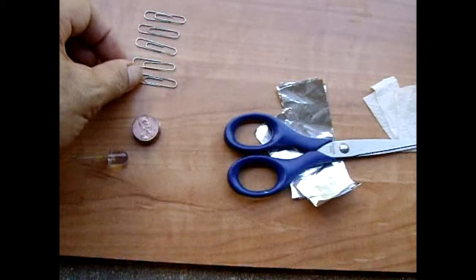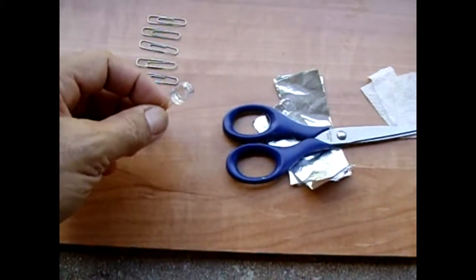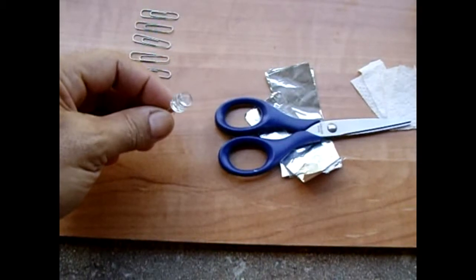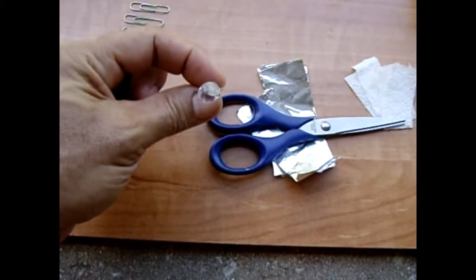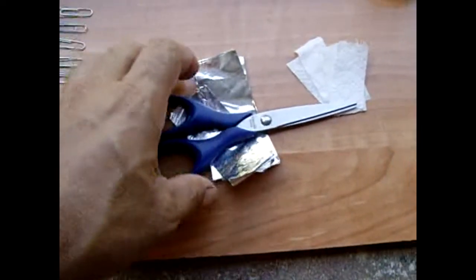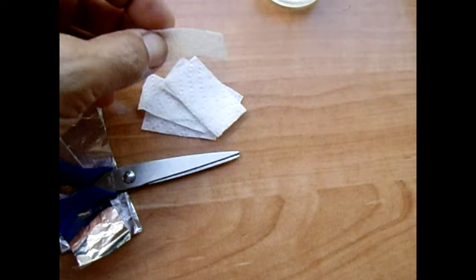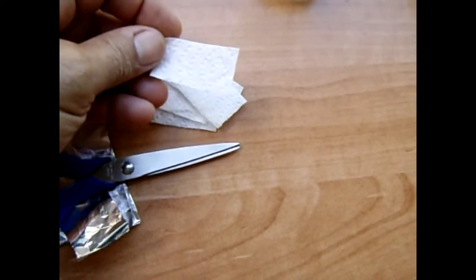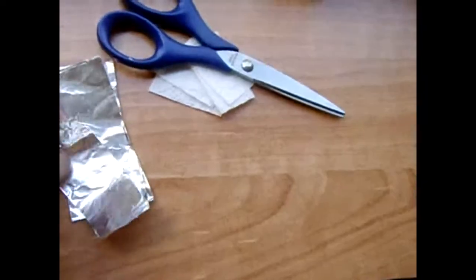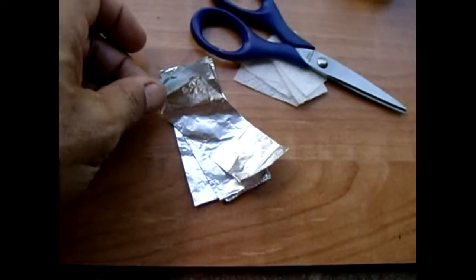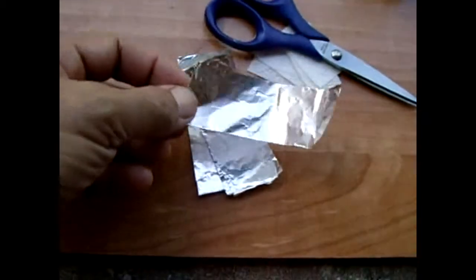You're gonna need five paperclips, one ultra bright LED, in this case I'm using a 10 millimeter. Five pieces of paper towel, each one is cut about three quarters of an inch wide by one and three quarters of an inch long. You're also going to need five strips of aluminum foil that have been pre-cut, in this case it's one inch wide by three inches long.